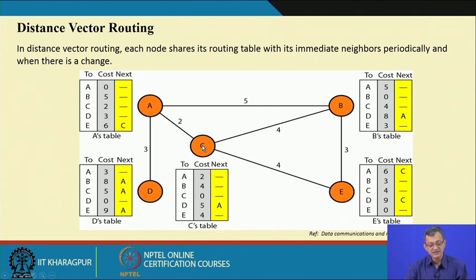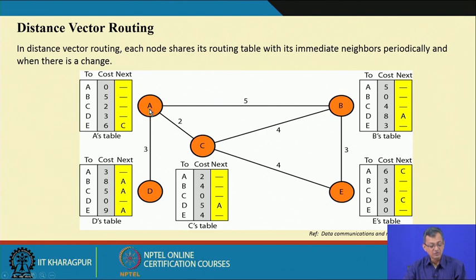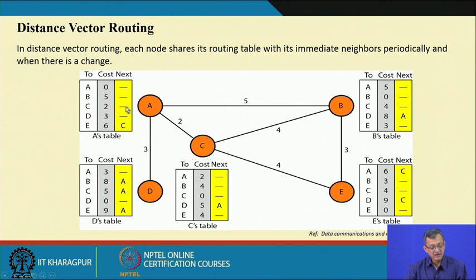A to E is 6 via C, so the next hop is C. Similarly, for D's table: D to A is 3, it is directly connected. Going to B, D has to go via A then B; it could also have been A, C, B based on costing. For C, it has to go via A and then C; for E, it goes A then C. So A to D is 3, but going to E via C is 6, giving an overall cost of 9.